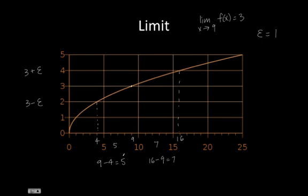Contrary to what some people might think, it's actually not 7 because if you think about it, if we chose an x value, 9 minus 7 equals 2. So if we chose f of 2, which would be over here, this point is no longer between 3 minus epsilon and 3 plus epsilon.